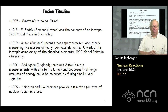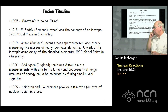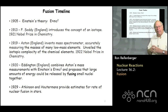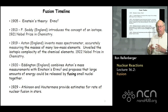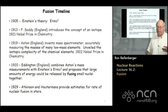Eddington, also from England, combined Aston's very accurate mass measurements with Einstein's E equals mc squared equation. He gets credit as the first person to propose that large amounts of energy could be released by fusing small nuclei together, basically introducing the idea of fusion.